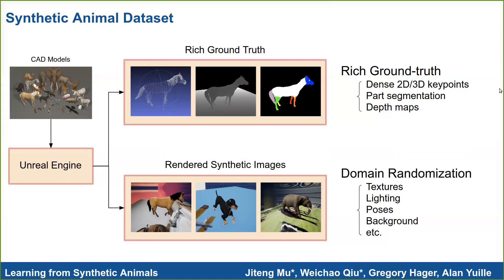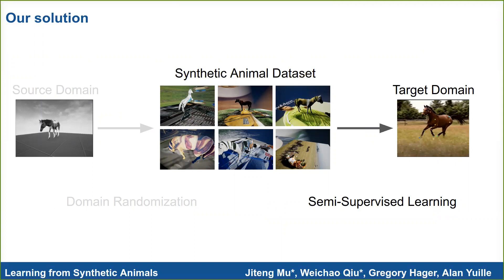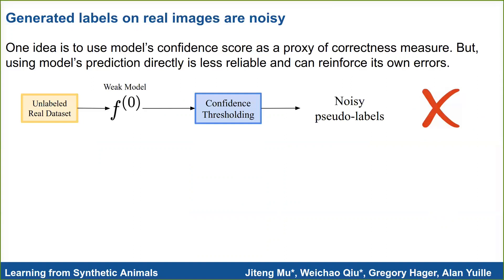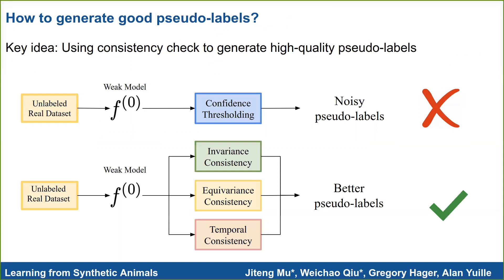After a synthetic animal dataset is generated, we can employ semi-supervised learning to take advantage of both synthetic images and unlabeled real images. Our idea is to refine weak models trained on synthetic data with unlabeled real images. Given a synthetic dataset, we first train a weak model F, then generate pseudo-labels Y-hat for real images. However, this is less ideal since the weak model's prediction is noisy and can reinforce its own errors. So we propose to use consistency checks to generate high-quality pseudo-labels.